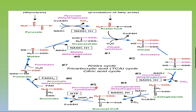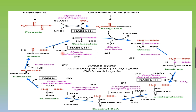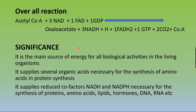The overall reaction of one turn of the Krebs cycle: one acetyl-CoA molecule enters along with three NAD⁺ molecules, one FAD molecule, and one GDP. The products are three NADH + H⁺, one FADH₂, one GTP, two molecules of carbon dioxide, and one coenzyme A released. Oxaloacetate is regenerated as the final product to continue the cycle.